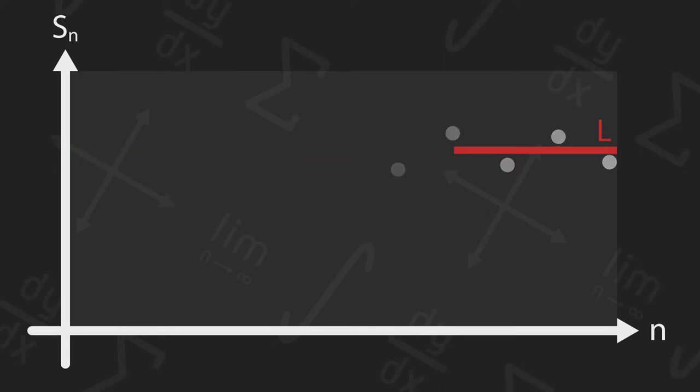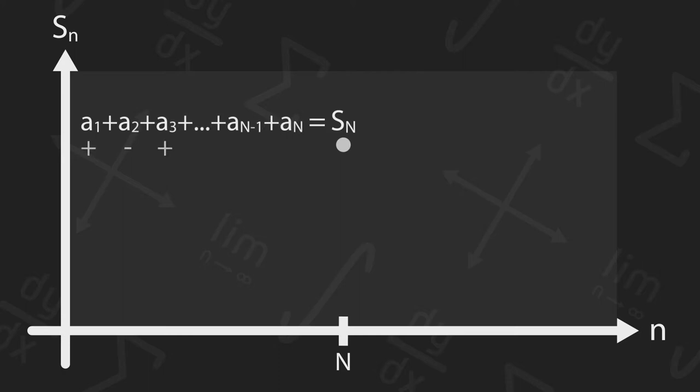Let's zoom in on an arbitrary value of n. We begin by plotting the partial sum S sub n, which equals a sub 1 plus a sub 2 plus a sub 3 all the way to a sub n, where each term is flipping between positive and negative.